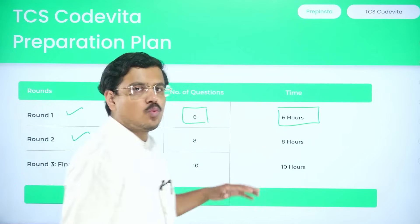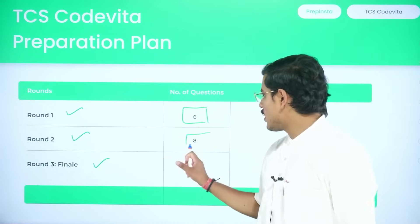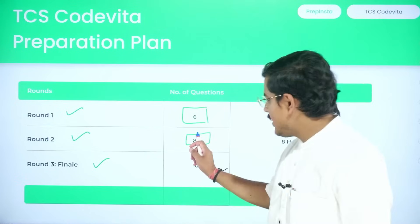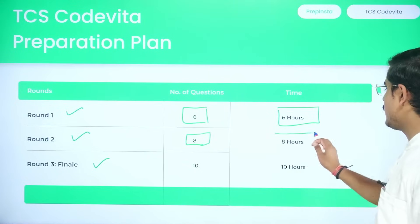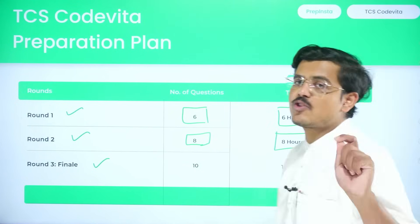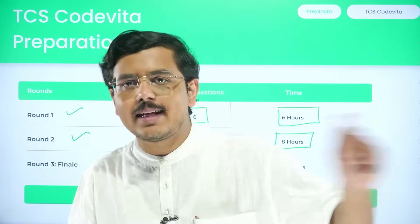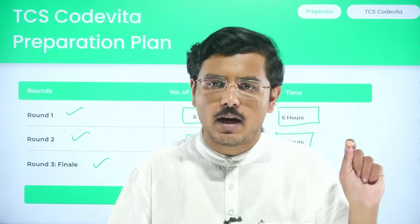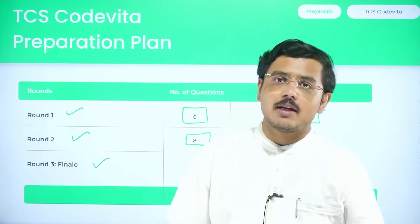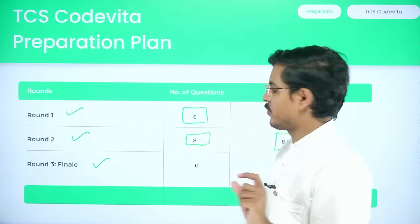When you move to round two, you have two extra questions, making it eight questions to be attempted in eight hours. All questions must have all test cases passing if you want to qualify for the next round, so you need a very optimized approach — your approach is judged in every piece of code.